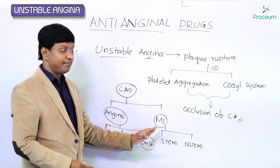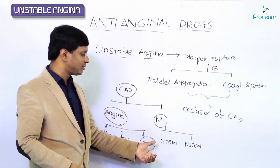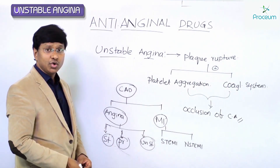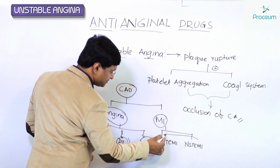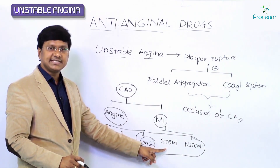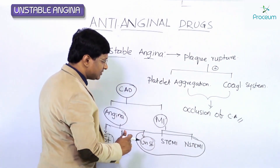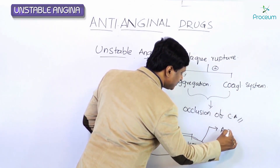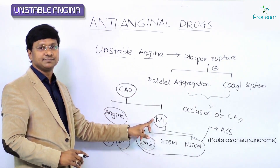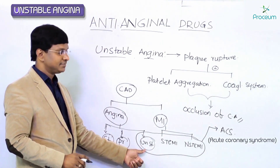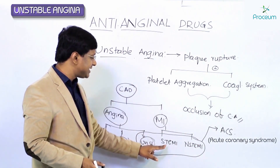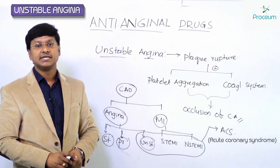Based on the ECG finding, if there is ST segment elevation we call it ST elevation MI, and if there is ST depression we call it non-ST elevation MI. Taking these three components — unstable angina, ST elevation MI, and non-ST elevation MI — these three together constitute the acute coronary syndrome.